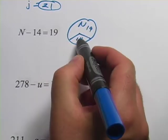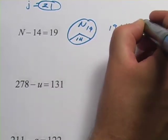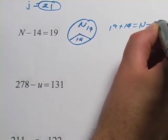So 19 plus 14 equals N and that equals 33.